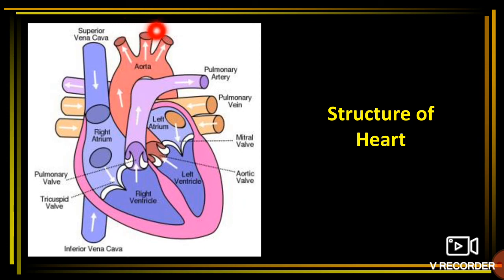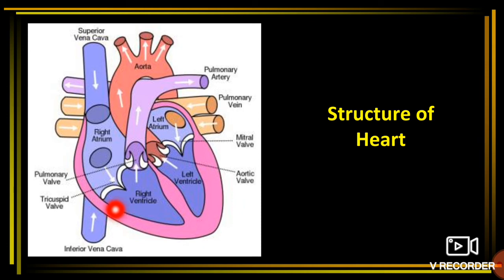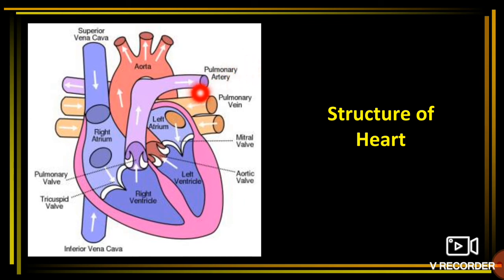The blood which travels throughout the body is then collected — from the superior vena cava (upper body) and the inferior vena cava (lower body). From here it goes to the right atrium and then to the right ventricle, which pumps it through the pulmonary artery to the lungs. In the lungs, the deoxygenated blood gets oxygenated and returns via the pulmonary vein — completing the cycle.